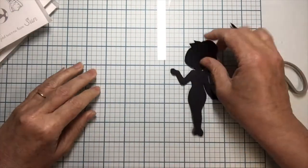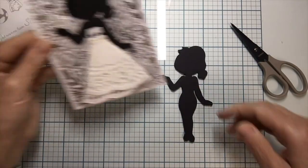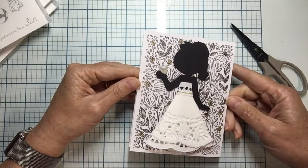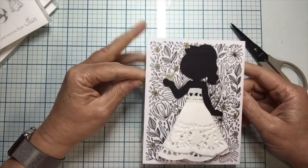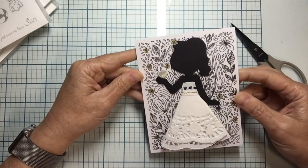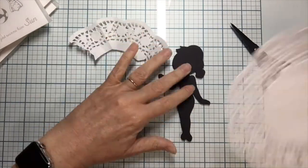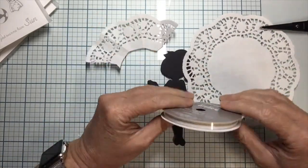So there I have my little silhouette of my paper doll. What we're going to end up making is this little bridal shower card that I made. It's basically using doilies and a little silhouette. You can use any background stamp that you have.